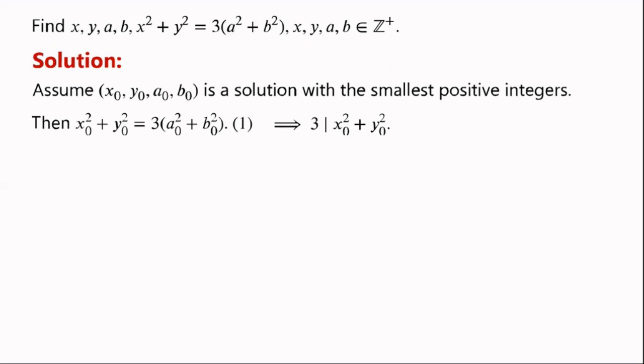which means 3 divides x0 squared plus y0 squared. This implies x0 is congruent to 0 mod 3, and y0 is congruent to 0 mod 3.